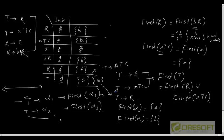We have discussed about the first and nullable functions, which will be used in deciding which production to select for a given non-terminal. In constructing a recursive descent parser or top-down parser, we need to know which rule to apply.